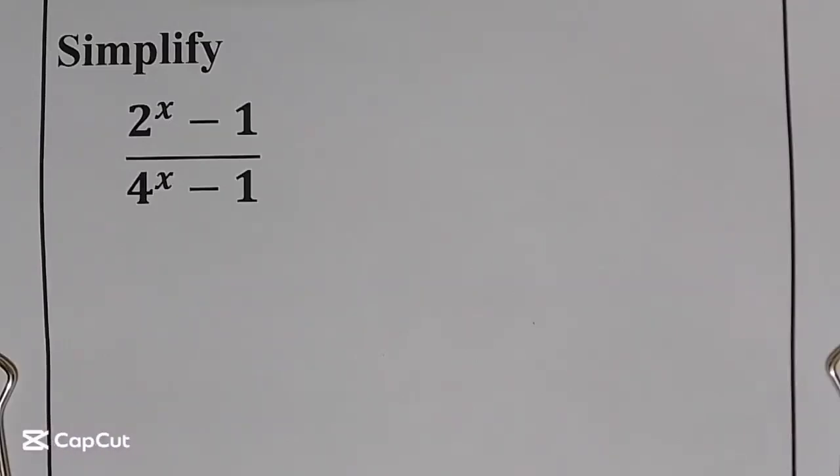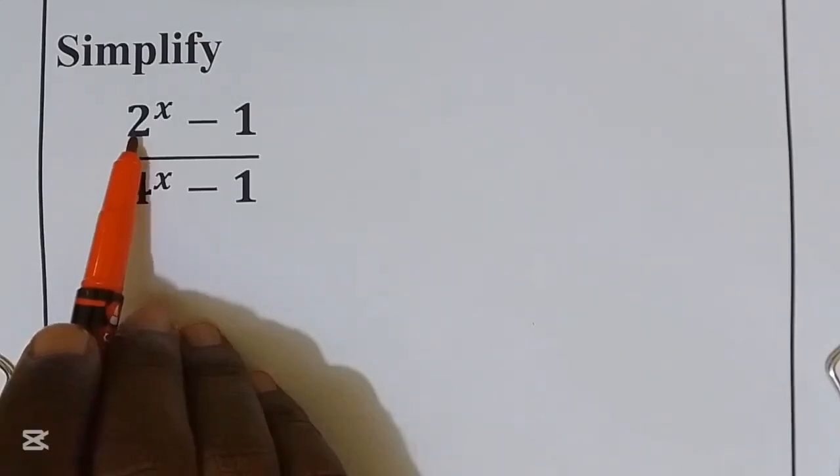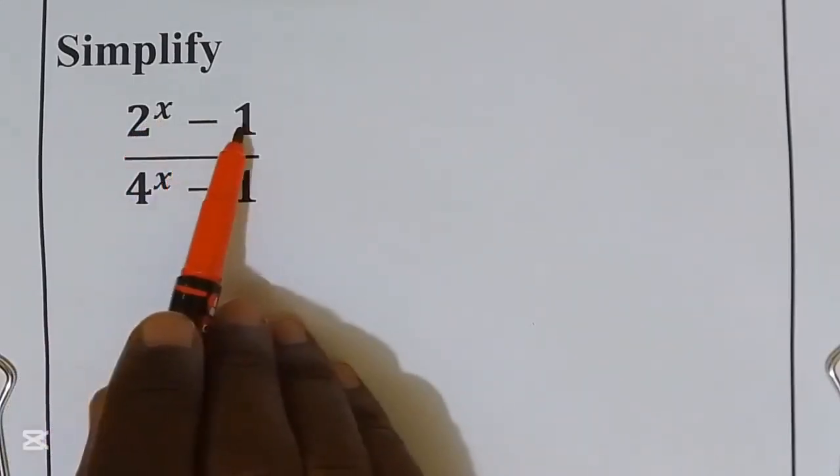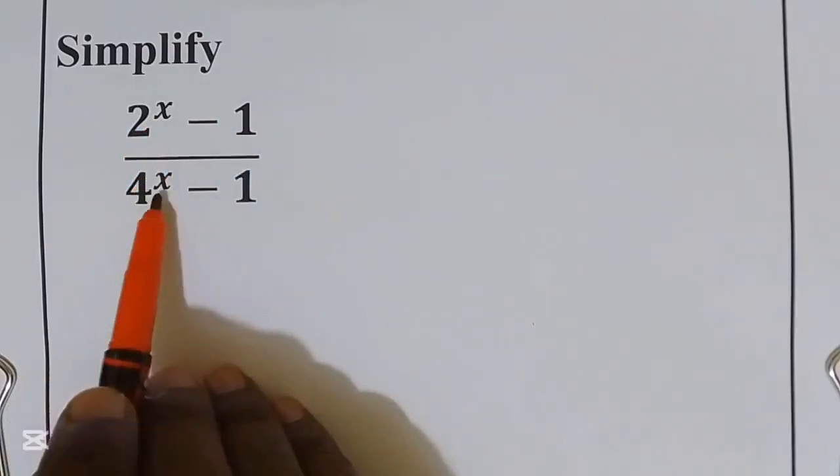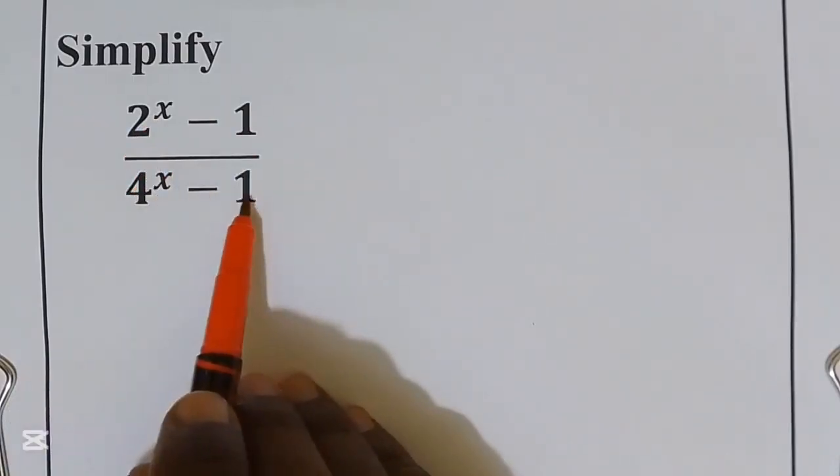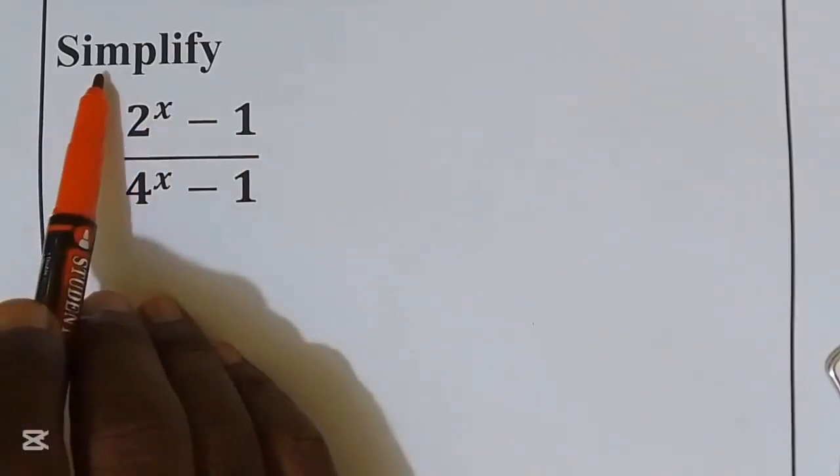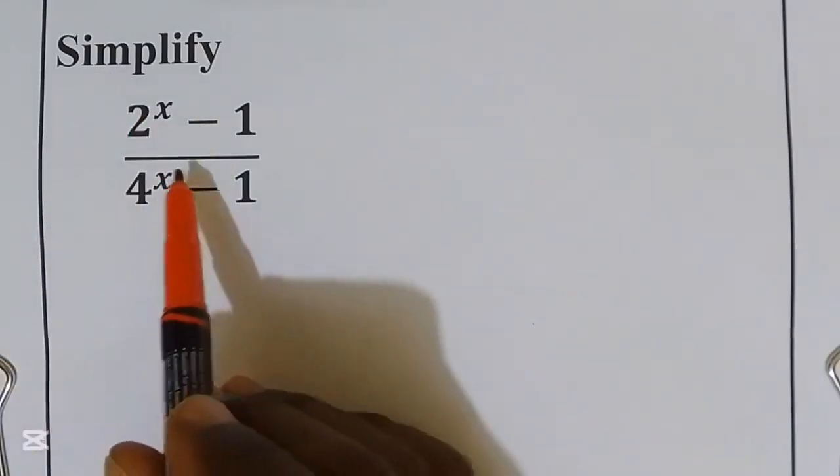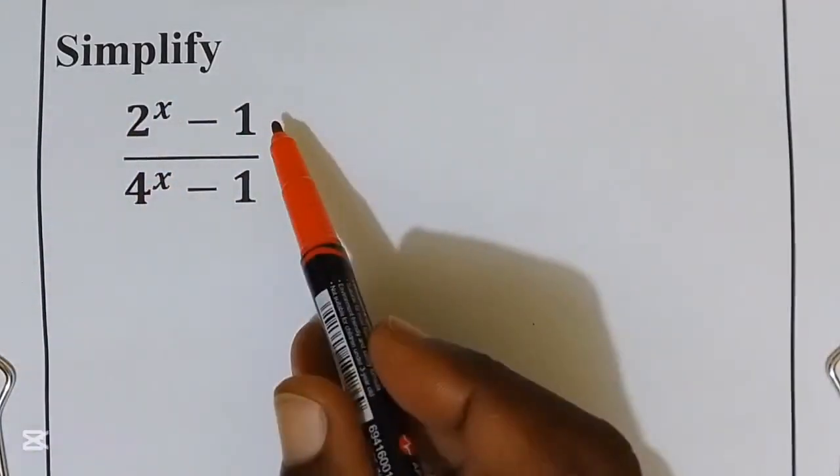Hello, welcome back to the channel. Let's simplify this exponential expression: (2^x - 1) over (4^x - 1). They need us to simplify it.